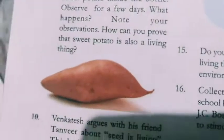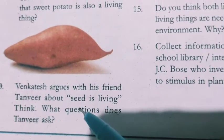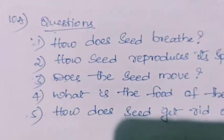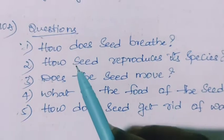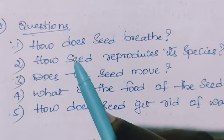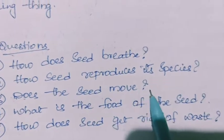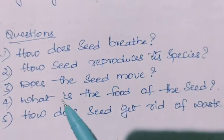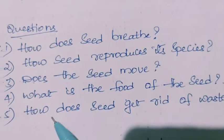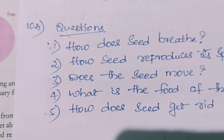Tenth question: Venkatesh argues with his friend Tanvir about whether a seed is a living thing. We have to prepare a questionnaire — some questions Tanvir might ask: how does a seed breathe? How does a seed reproduce its species? Does the seed move? What is the food of the seed? How does the seed get rid of waste? These are some of the questions; you can add many more.